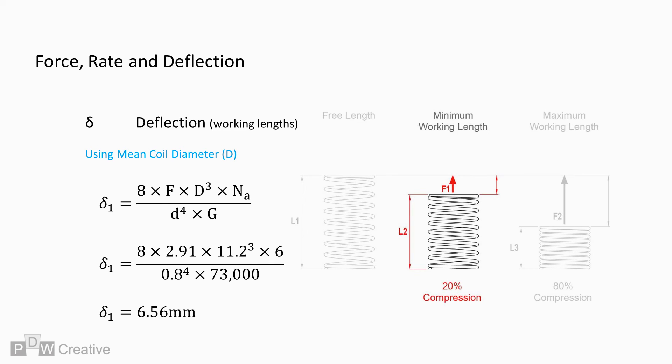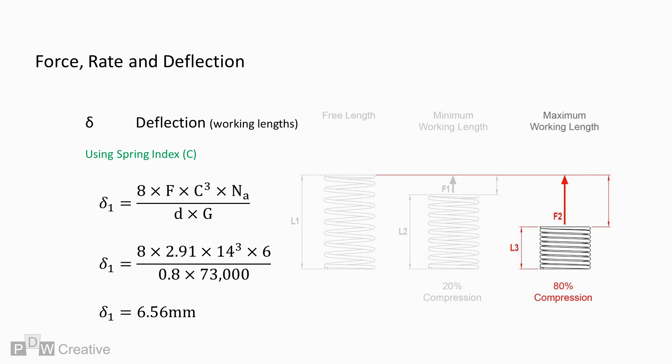We can switch the focus from the mean coil diameter to the spring index to work out the deflection. 8 times force at length times spring index to the power of 3 times the number of active coils divided by the wire diameter times the modulus of rigidity gives us a deflection of 6.56 mm.